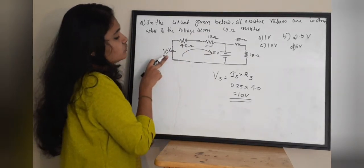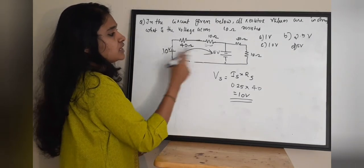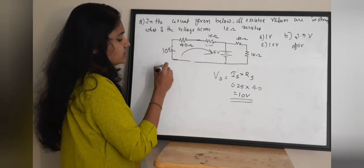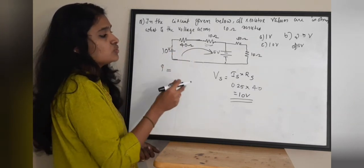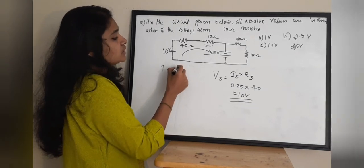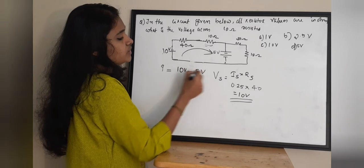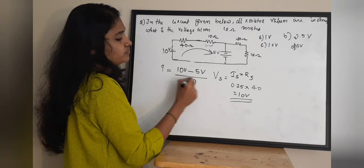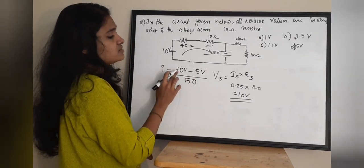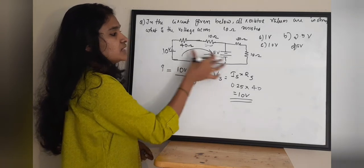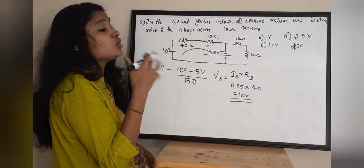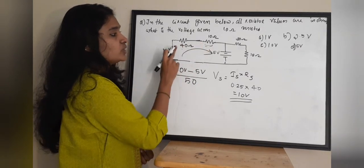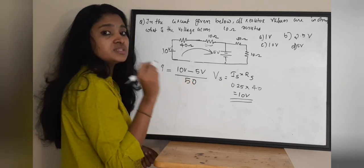There is a 10 volt source and a 5 volt source. Since they are connected in opposite directions, we take the difference. The current I equals voltage divided by resistance: (10 − 5) / (40 + 10) = 5 / 50 = 1/10 = 0.1 ampere. The resistors are in series so we use 40 + 10 = 50 ohms. This is the current flowing through the network.